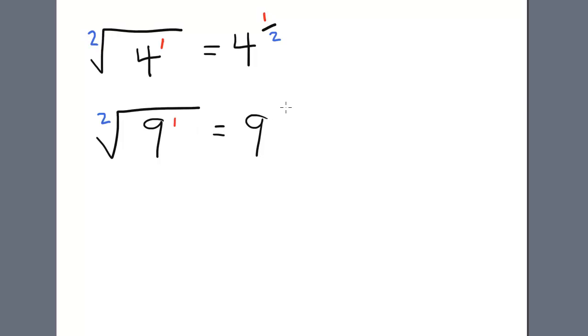And then since it's 9 to the first power, the 1 will be the numerator, and the 2, which is the index of the radicand, will be our denominator. So the square root of 9 can be rewritten as 9 to the 1/2.